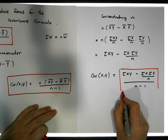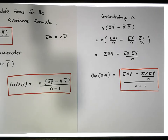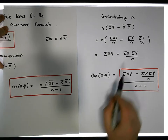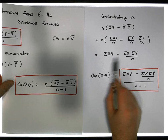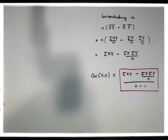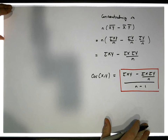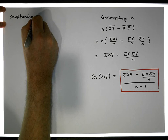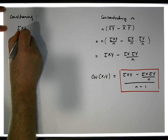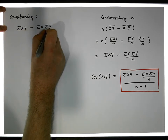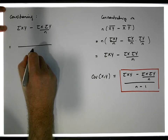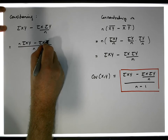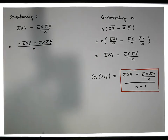Finally, we can make this a little bit neater through common denominators. Considering the sum of the x y's minus the sum of the x's times the sum of y's over n — the common denominator is n — so this becomes n times the sum of the x y's minus the sum of the x's times the sum of the y's.